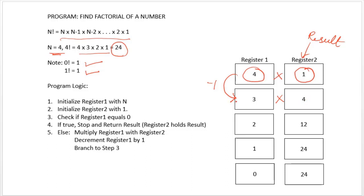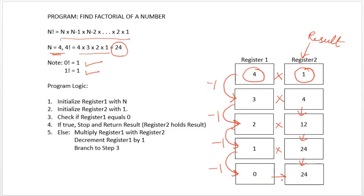For example with n=4: 3 × 4 = 12 stored in R2, then decrement R1 to 2; 2 × 12 = 24 stored in R2, decrement R1 to 1; 1 × 24 = 24 stored in R2, decrement R1 to 0. When R1 becomes 0, we stop and return the factorial result stored in R2 — so 4 factorial is 24.